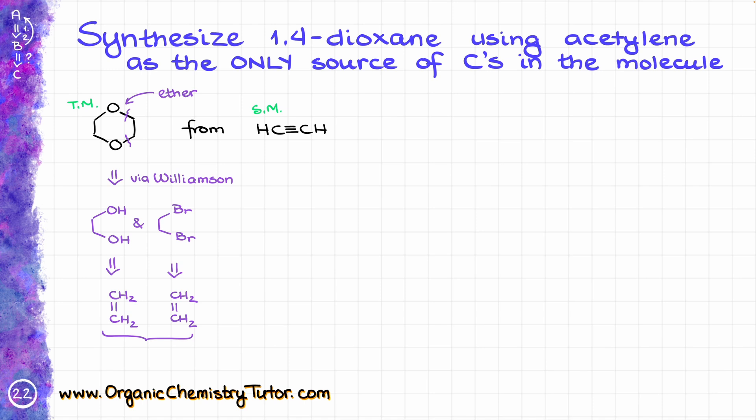Lastly, I need to figure out how to make an alkene from acetylene, and that part is quite trivial — I can make my alkene from acetylene via partial reduction. Assembling everything together into one synthetic scheme, I'm going to have my starting material acetylene reacting with hydrogen over Lindlar's palladium, giving me the corresponding alkene, ethylene, or if you like the IUPAC name, ethene.